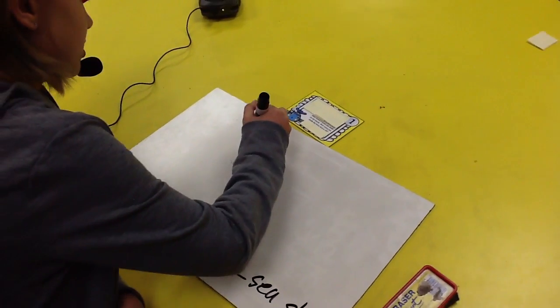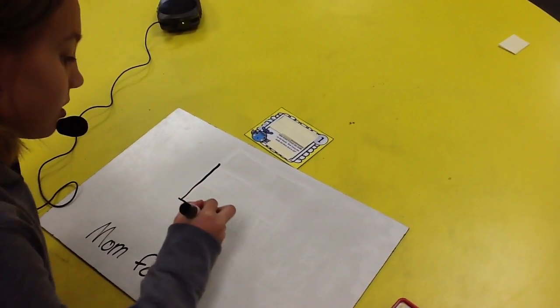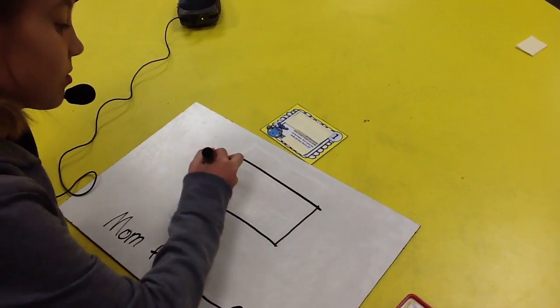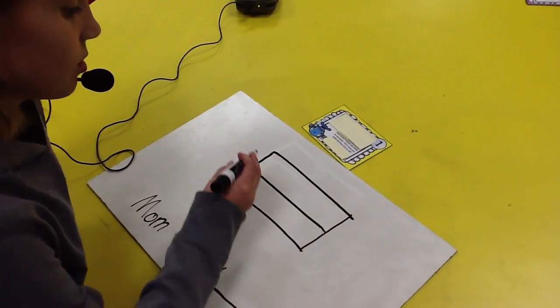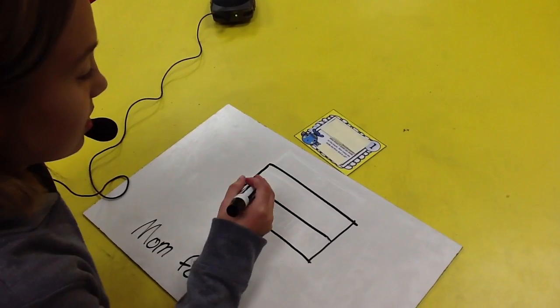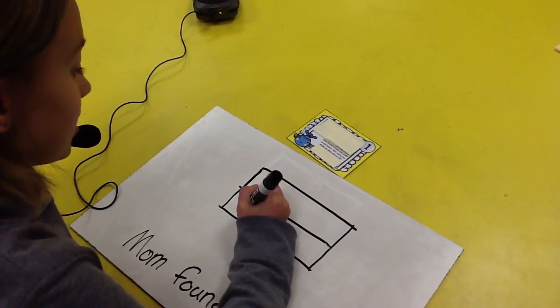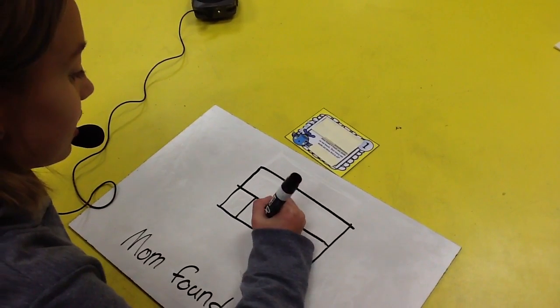Now I need to draw my strip diagram. I know that it says five dozen seashells so that means I have to have five groups.